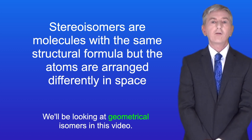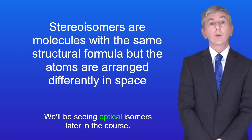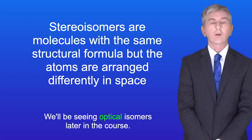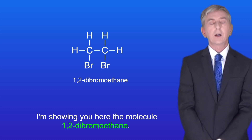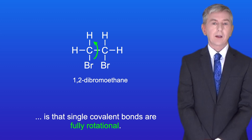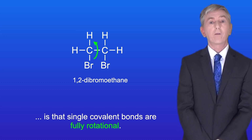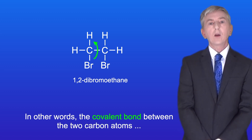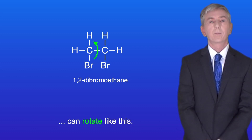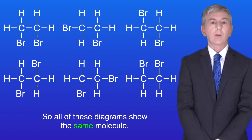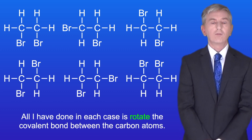We'll be looking at geometrical isomers in this video and optical isomers later in the course. Here is the molecule 1,2-dibromoethane. A key idea you need to understand is that single covalent bonds are fully rotational — the covalent bond between the two carbon atoms can rotate. So all of these diagrams show the same molecule; all I've done is rotate the covalent bond between the carbon atoms.